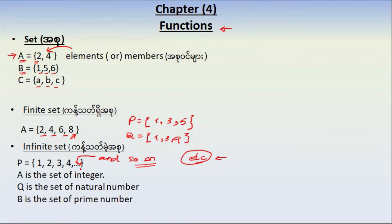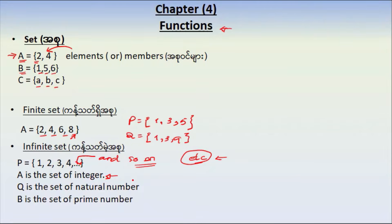The new concept is really important. This is the set of integers. We have a number system. The number system includes plus or minus 1, plus or minus 2, plus or minus 3, and so on, including 0.